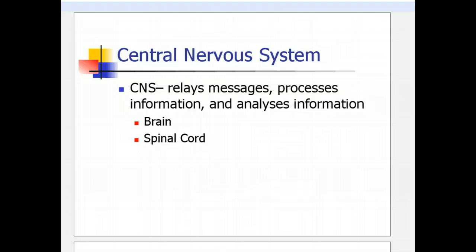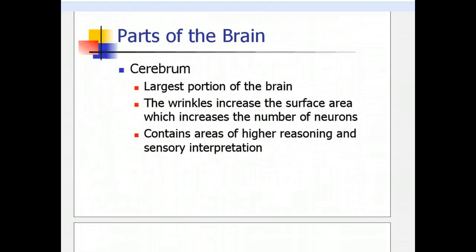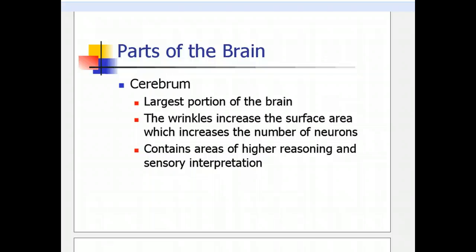Let's spend a little bit of time talking about the parts of the brain. The first part you need to know about is the cerebrum. The cerebrum is the largest portion of the brain, and it's very wrinkly. The wrinkles have an important function: they increase the surface area. Something that's wrinkled has more area than something flat, and in that increased area you can fit more neurons. So your brain can hold more neurons because it's wrinkled than it could if it were flat.